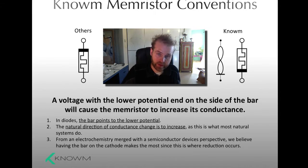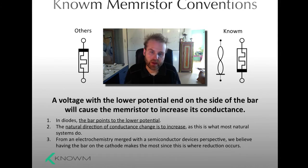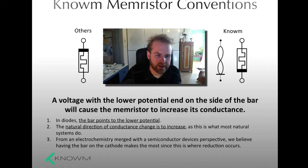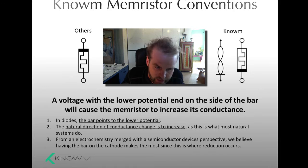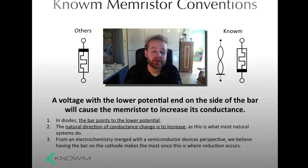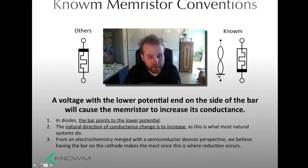Check out the adaptive power solution episode down the page. But basically, nature tends to organize in such a way as to increase dissipation and increase the flow through a system — so that is kind of the natural direction. If that's the natural direction, and our convention in diodes is to put the bar on the negative potential end, then let's just define it that way. Also, from an electrochemistry merged with a semiconductor device perspective, having the bar on the cathode makes the most sense, because that's where reduction occurs. So a lot of these things make sense, which is why we do it. We draw this symbol especially on the whiteboard because it's just way easier to draw and it symbolically makes sense — we think it's just a better symbol.